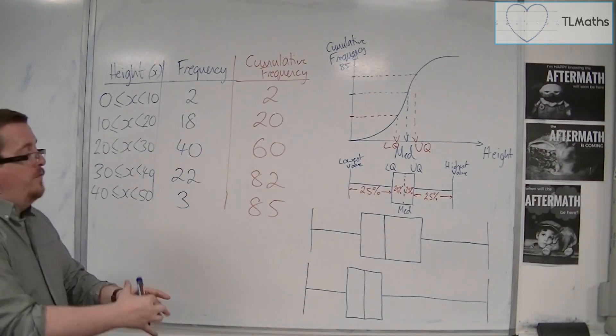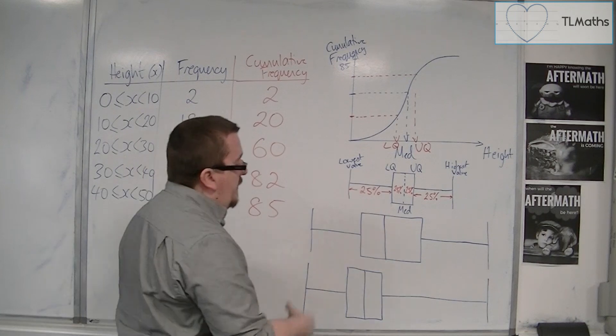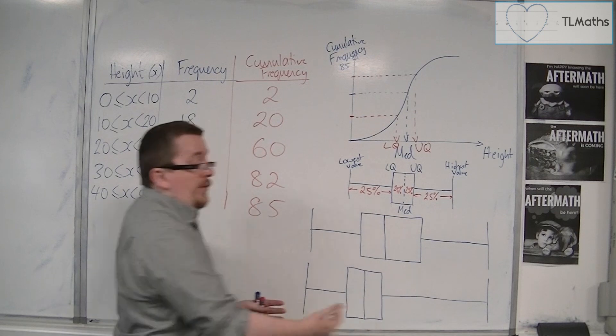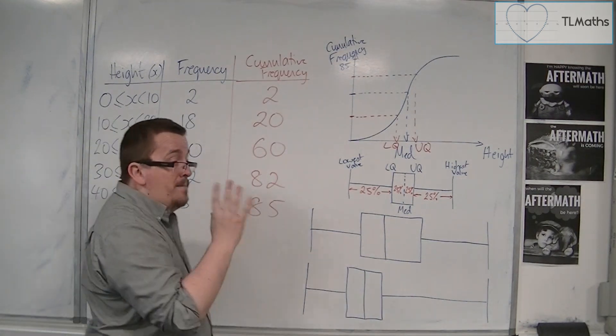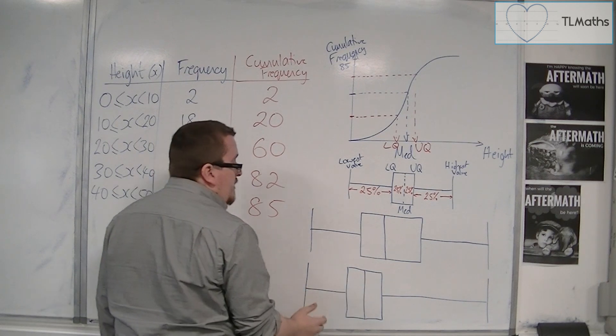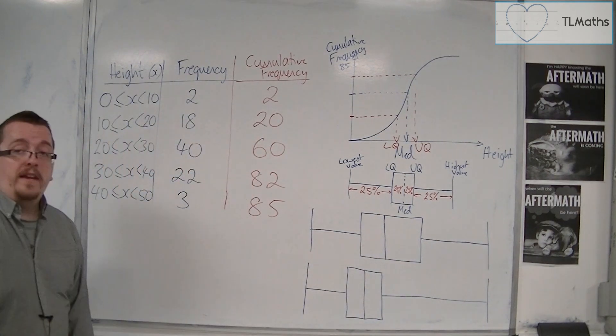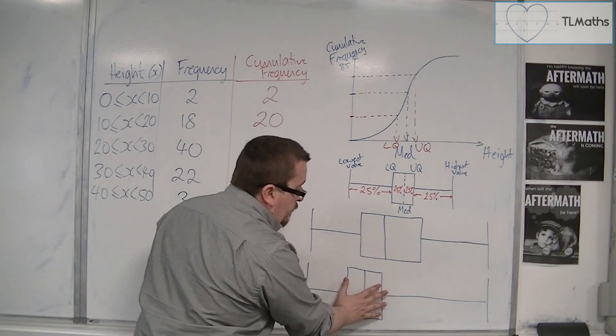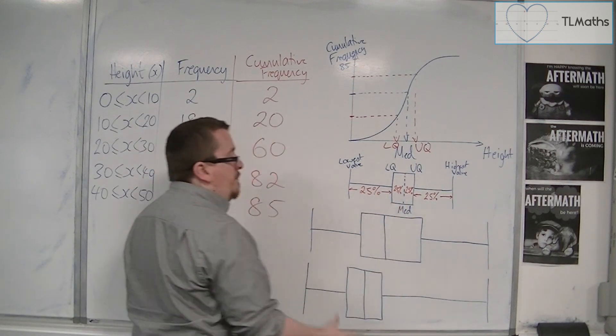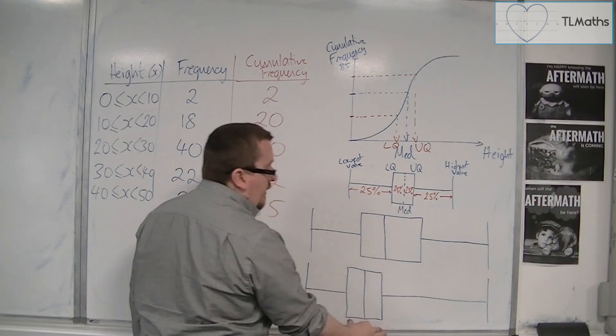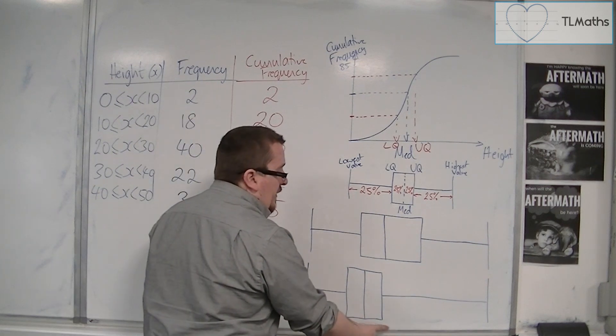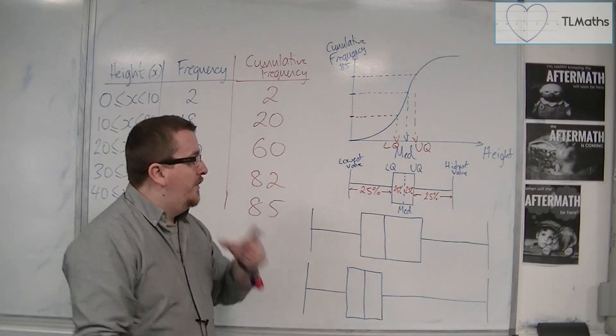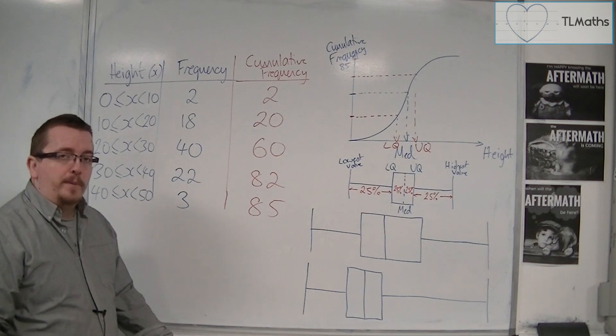But the thing is that what you need to understand is that, yes, you can make a comparison that the lowest value and the upper values are the same for both cases. The median for this data set is less than that one. So, you would say that the average is lower. However, this group is more consistent than that group because it has a shorter interquartile range. This box is narrower than that one. This one is more spread out and is less consistent because of it.